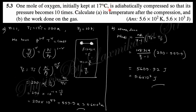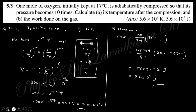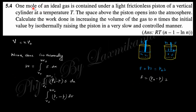Question 3: One mole of oxygen initially at 17°C is adiabatically compressed until its pressure becomes 10 times the initial pressure. Using the pressure-temperature relation for an adiabatic process, you can find the final temperature after compression. The work done by the gas is calculated using the standard adiabatic work formula W = nR(T_i − T_f)/(γ−1), substituting the known values.